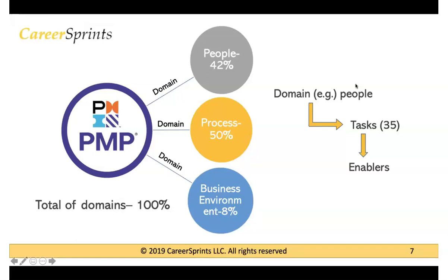Broadly what PMI has done is they released this new content outline in 2019 for the change that was going to happen in 2021. What they're basically saying is that now the exam will have three primary sections. The first section would be People, the next section would be Process, and the third section would be Business Environment. These sections are basically called domains, and each domain addresses a specific area of project management that you should have a good understanding of to be able to clear the PMP exam.